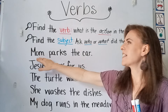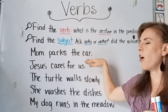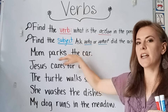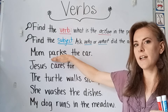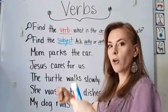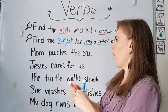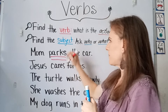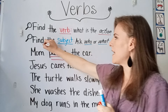So let's look at our first sentence: Mom parks the car. What's the action being done in the predicate? Parks. That's what's being done — that's the action, parking the car. So this is our verb; this is the action that's in the predicate.